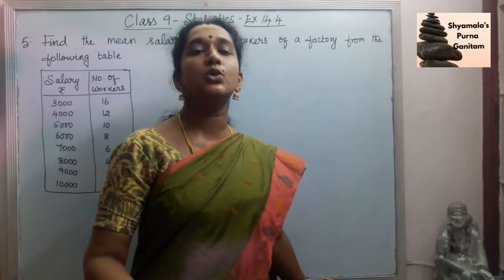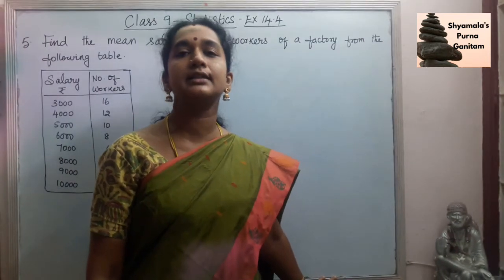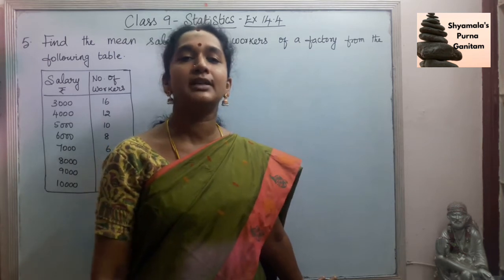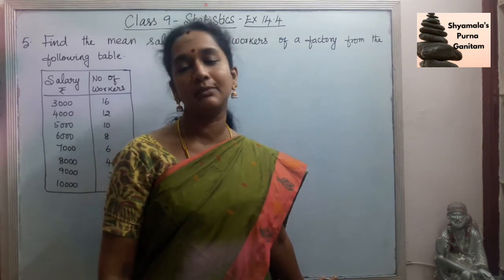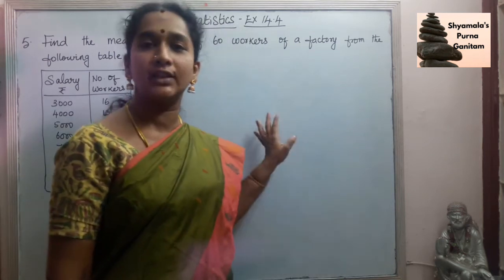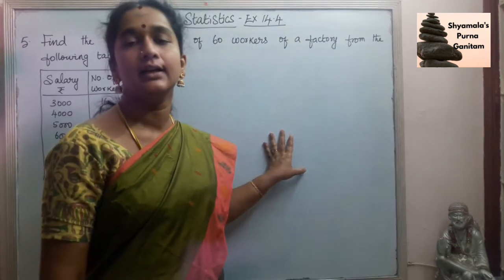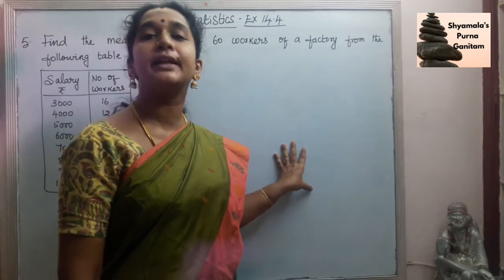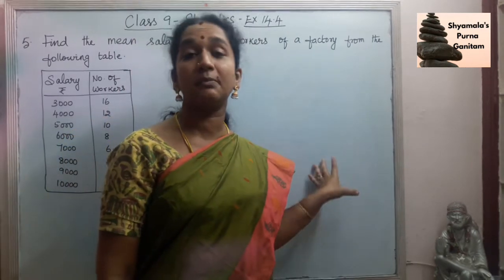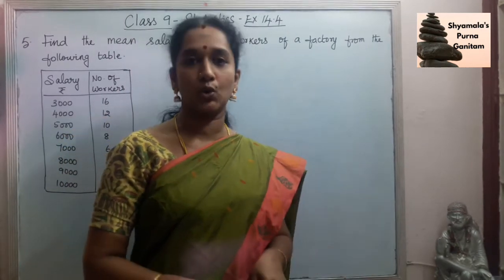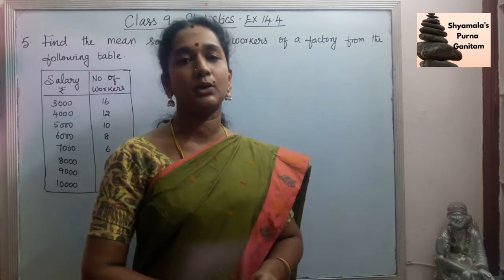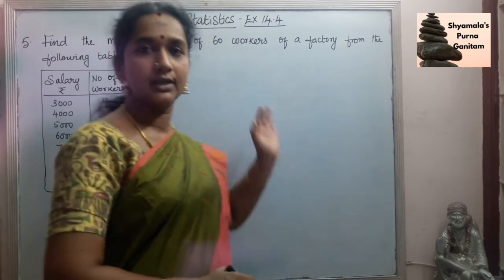There is one more sum — the sixth sum — where we have to give some examples for mean, median and mode. With this I will be completing the exercise, and the Statistics chapter itself will be over.